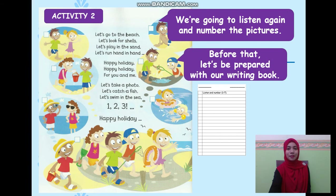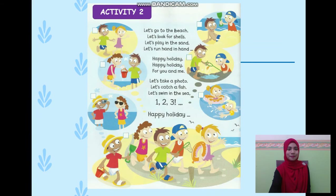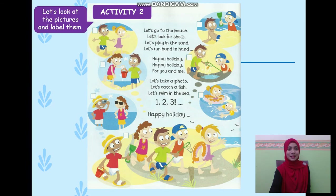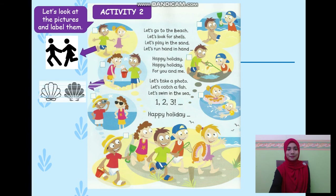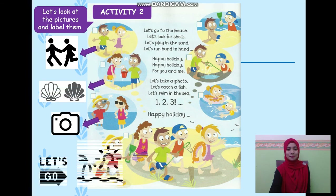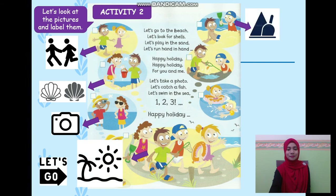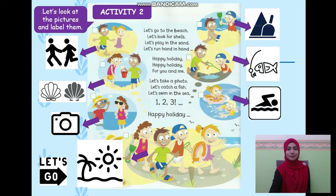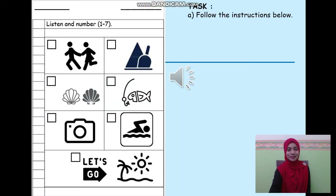Before that, let's be prepared with our writing book. Before we number the pictures, we need to draw the pictures. So, to make it easier for us to draw, let's change the pictures to icons. Let's look at the pictures and label them to icons. We have seven icons for all seven pictures.